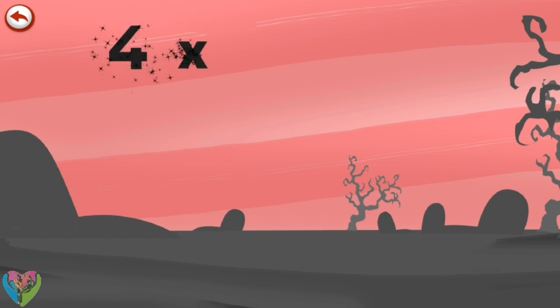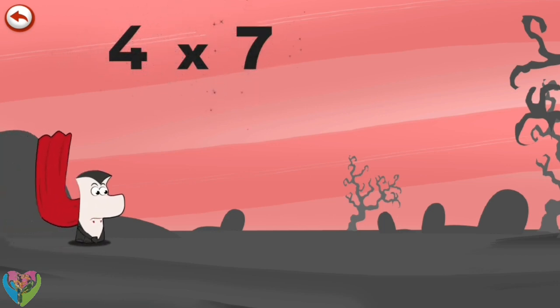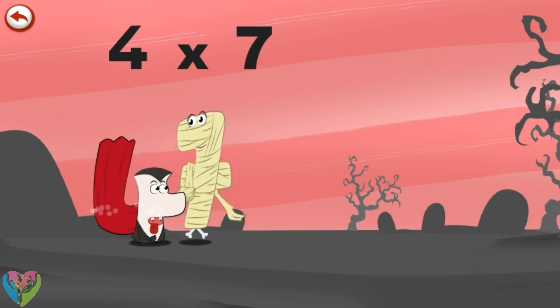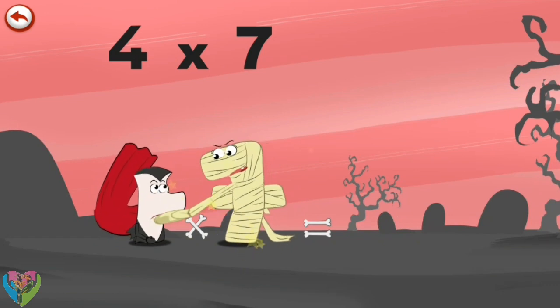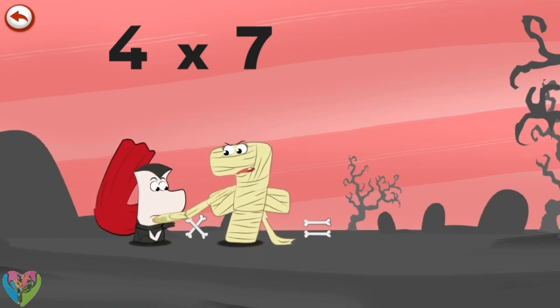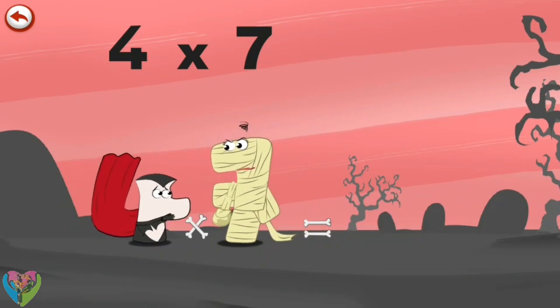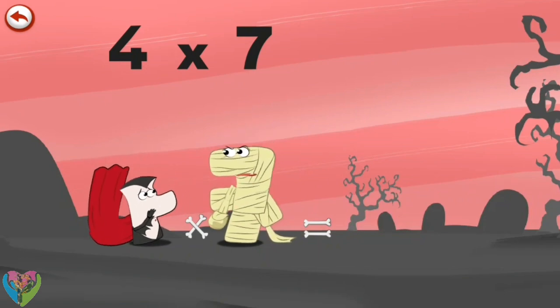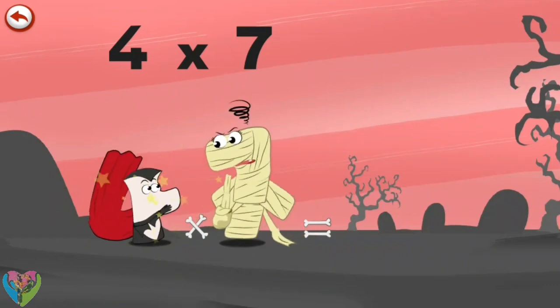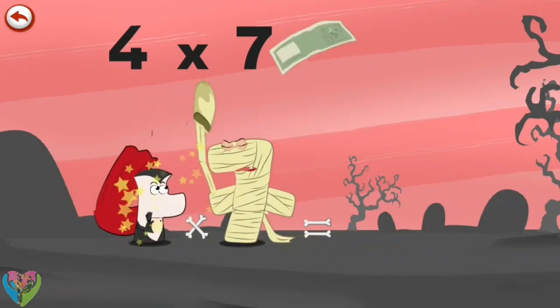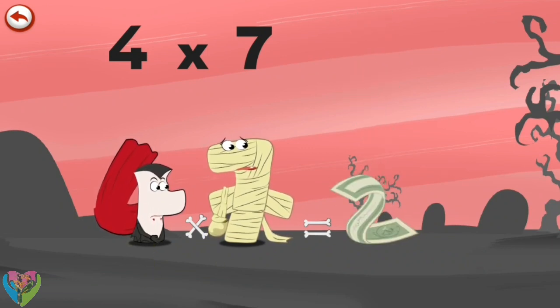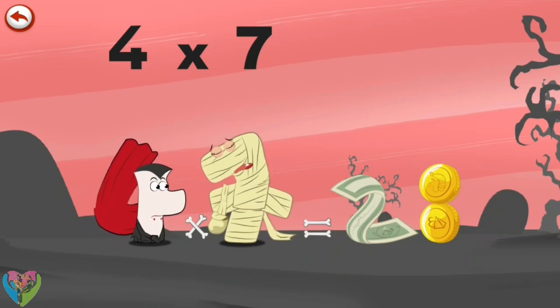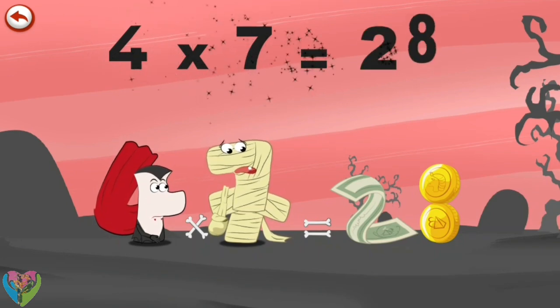What's the story of 4 times 7? When Vamp 4 sees the mummy ram 7, he can't help biting her, but he only manages to take a bite out of the mummy's handbag. She is so angry. She rears up and hits Vamp 4 on the head, spilling everything in her bag. A fine banknote in the shape of a 2, and several coins which pile up in the shape of an 8. 4 times 7 is 28.